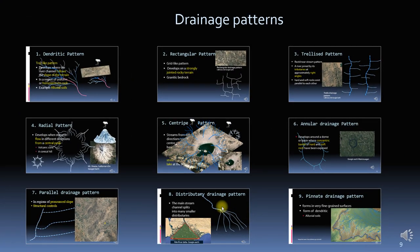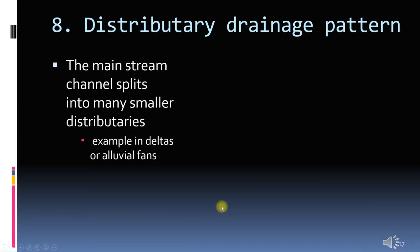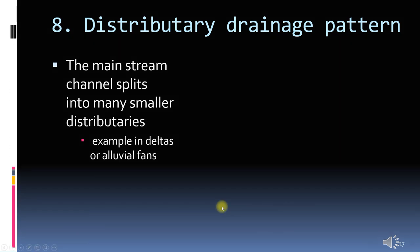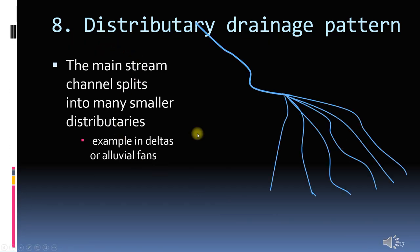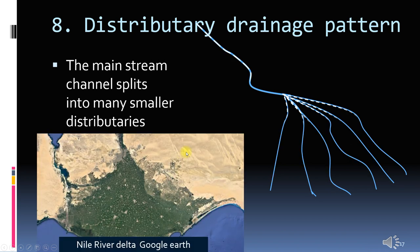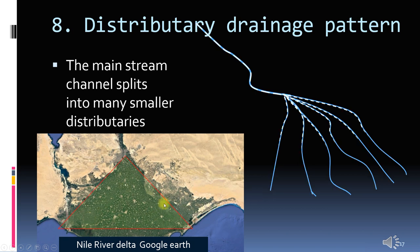The eighth drainage pattern is the distributory type. A large stream splits into smaller distributaries. You can see there is a mainstream and then it splits into many smaller streams. Examples are deltas or alluvial fans. This is the Nile River Delta, named so because its shape is like the Greek letter delta.